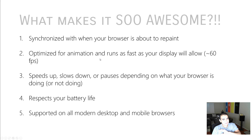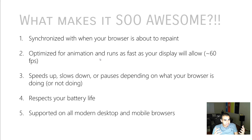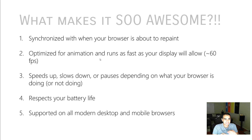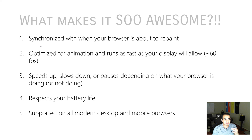So what makes requestAnimationFrame so awesome? First, it is synchronized with when your browser is about to repaint. Many times when you're creating a loop, you never quite know what your browser is doing — it could be in the middle of some computationally intensive task. You often have code running that is almost wasteful. requestAnimationFrame avoids that because it is in constant communication with the right moment to call your animation loop function, so you don't waste effort and you draw things only when they need to be drawn.